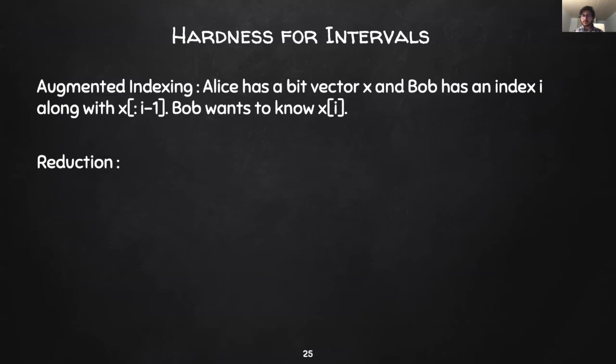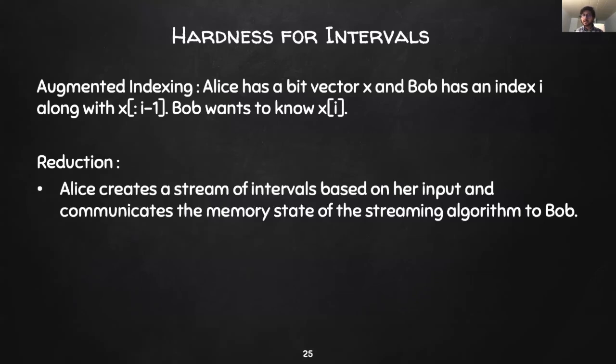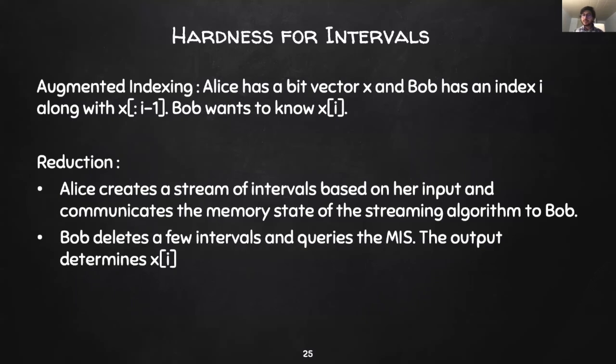Given this result, our reduction proceeds as follows. Alice creates a stream of intervals based on her input and runs the streaming algorithm on this input. She then communicates the state of the streaming algorithm to Bob. Bob deletes a few intervals and then queries the algorithm for the current maximum independent set.